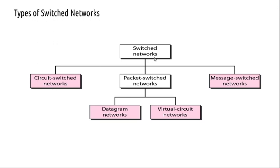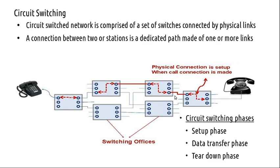Switched networks can be of three types: circuit switched networks, packet switched networks, and message switched networks. The internet, as we know, is a packet switched network. There are two types of packet switched networks: datagram networks and virtual circuit networks.